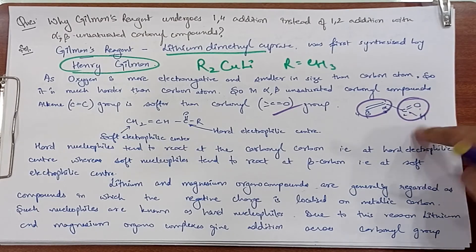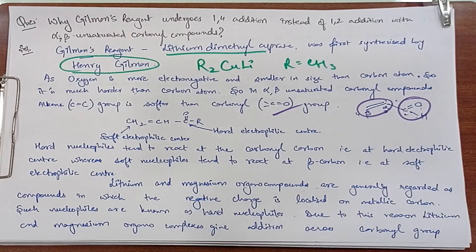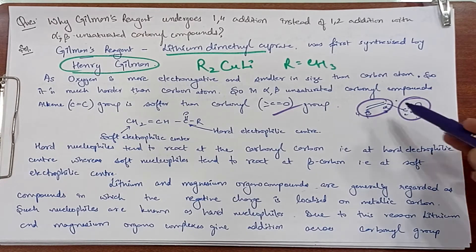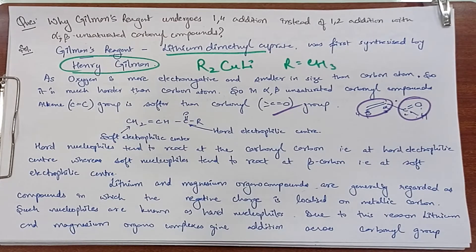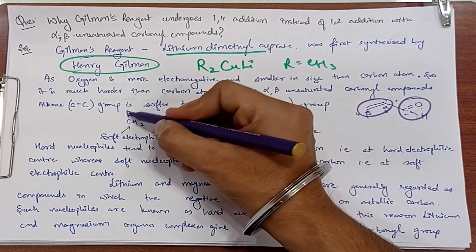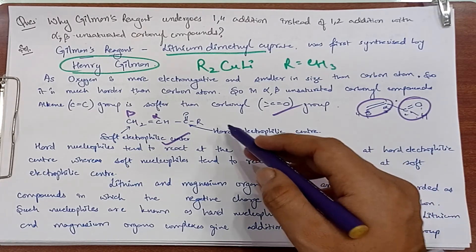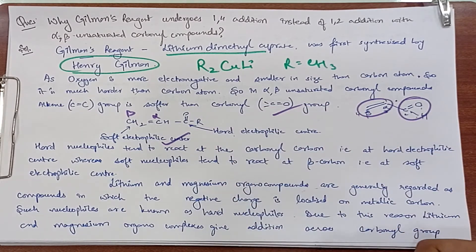So in alpha-beta unsaturated carbonyl compounds, the alkene group is softer than the carbonyl group. Alkene group is carbon-carbon which is soft. Why? Because carbonyl has oxygen, and oxygen is hard, so carbonyl is hard. Carbon is larger in size, so it is soft. This is why the alkene group is soft. This is our soft electrophilic center, that is beta-carbon, alpha-carbon, and this is our carbonyl group. This is our hard electrophilic center because this is oxygen.